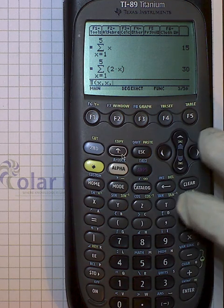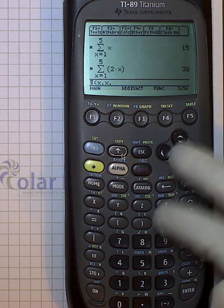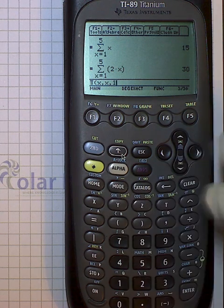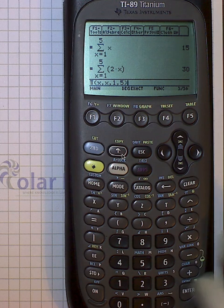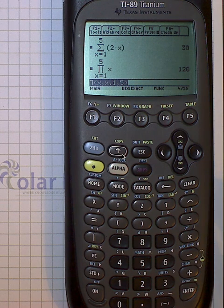a second x here for the same reason we had to for sigma, and then one, and then comma, five, close parentheses, hit enter, and there it is, 120 as we expect. All right, this is it for this video, but keep watching.